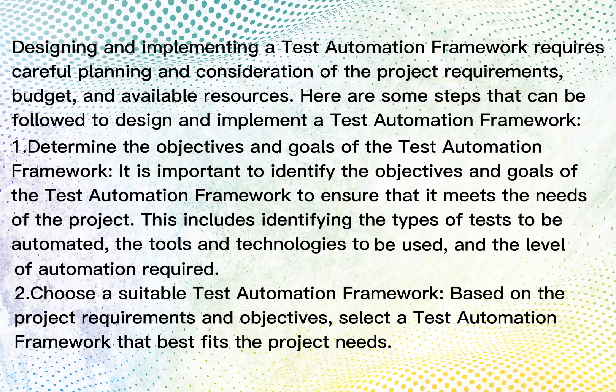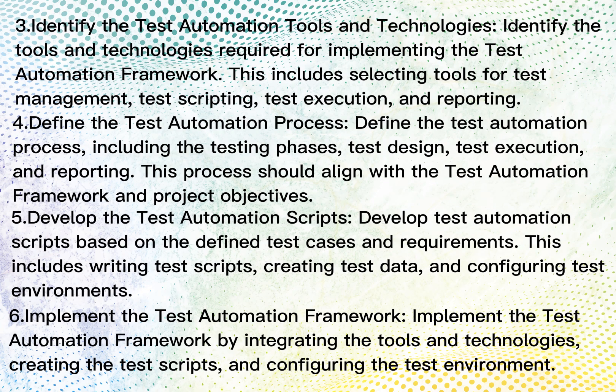Step 2: Choose a suitable test automation framework. Based on the project requirements and objectives, select a test automation framework that best fits the project needs. Step 3: Identify the test automation tools and technologies required for implementing the framework, including selecting tools for test management, test scripting, test execution, and reporting.